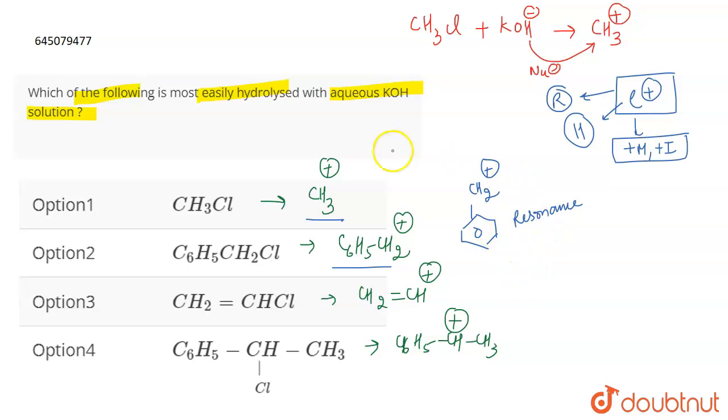If you talk about the first one, there's no group attached to it. It is just simply a methyl carbocation. There's no plus I effect, there's no plus M effect, there's neither resonance effect or hyperconjugation effect, nothing is there. It is going to be very less stable.